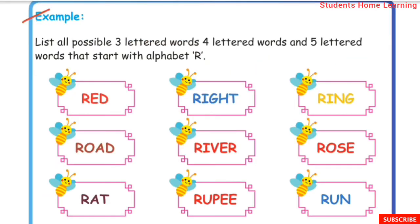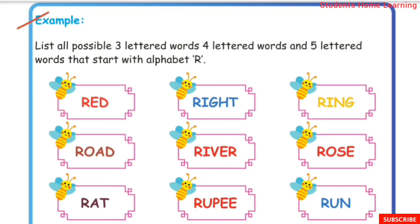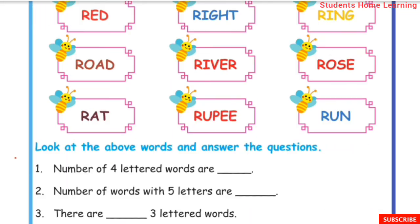Example: List all possible 3-lettered words, 4-lettered words, and 5-lettered words that start with the alphabet R. Look at the words listed and answer the questions.